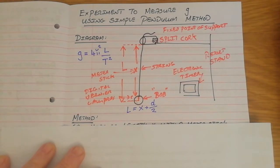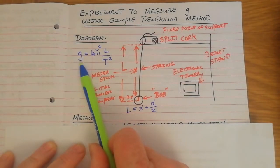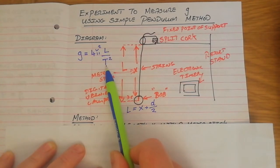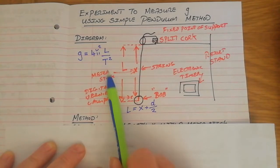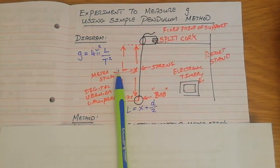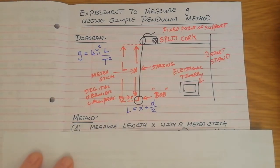To calculate g, we need the length of the pendulum and the time for one swing. The time for one swing would be very small — maybe a second or a second and a half — and when dealing with small numbers you tend to get high percentage errors. So there's a way around that.